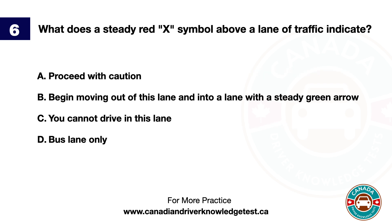Question 6. What does a steady red X symbol above a lane of traffic indicate? A. Proceed with caution. B. Begin moving out of this lane and into a lane with a steady green arrow. C. You cannot drive in this lane. D. Bus lane only. The answer is C. You cannot drive in this lane.